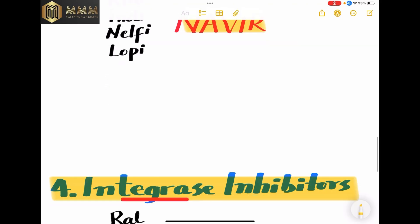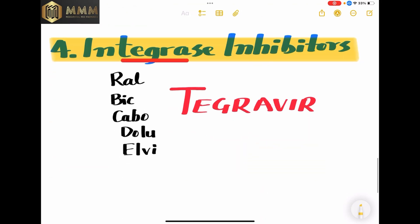The fourth, relatively newer group of HIV medications is integrase inhibitors. All of these medications end in '-tegravir,' like bictegravir, cabotegravir, dolutegravir, and elvitegravir.